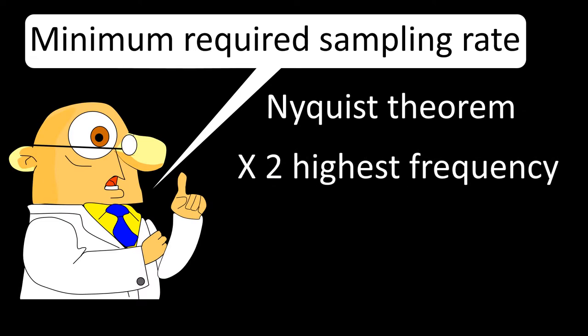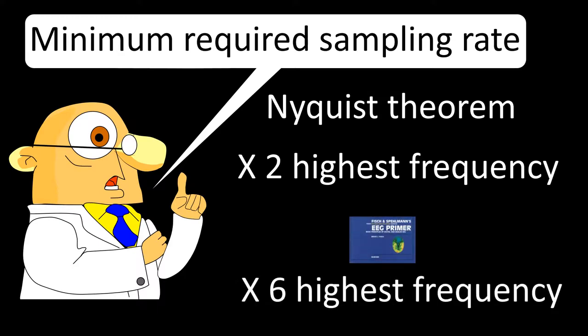The Nyquist theorem states that gathering data points at a rate of twice the highest frequency found in a wave will allow reconstruction of the original wave with high fidelity. This is not strictly true, but you must remember it because it is often used in explanations and asked during exams. What is true is that collecting data at six or more times the highest desirable wave frequency will produce a wave with qualities very similar to continuous analog recording.